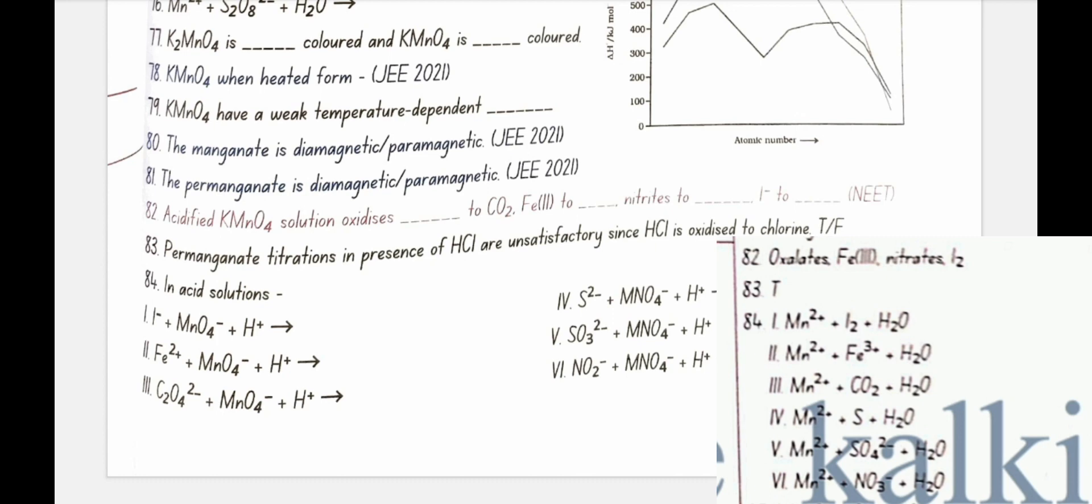In acidic solutions, I- plus MnO4 minus plus H plus gives Mn2 plus plus I2 plus H2O. Fe2 plus plus MnO4 minus plus H plus gives Mn2 plus plus Fe3 plus plus H2O. C2O4 2 minus plus MnO4 minus plus H plus gives Mn2 plus plus CO2 plus H2O. SO3 2 minus plus MnO4 minus plus H plus gives Mn2 plus plus SO4 2 minus plus H2O. NO2 minus plus MnO4 minus plus H plus gives Mn2 plus plus NO3 minus plus H2O.